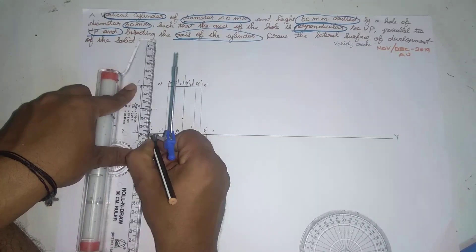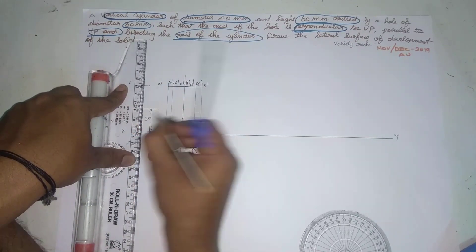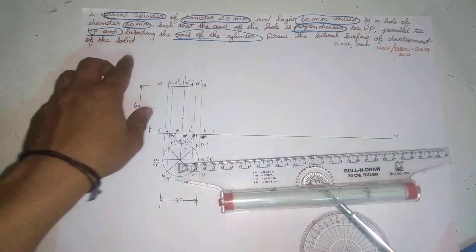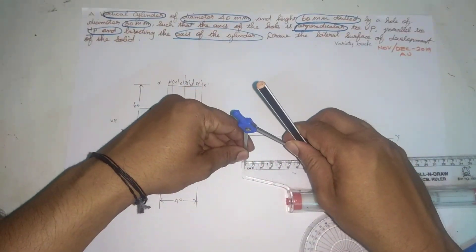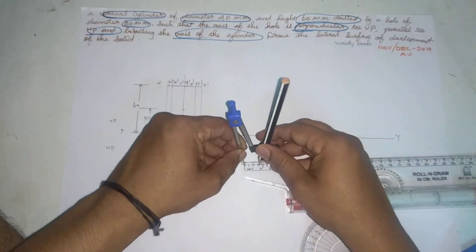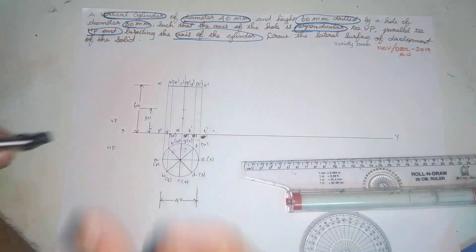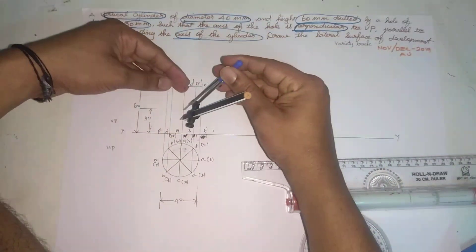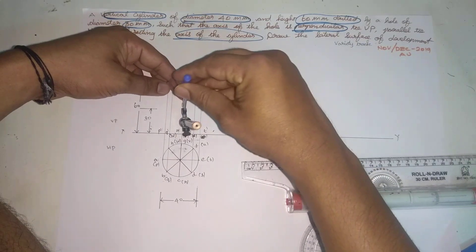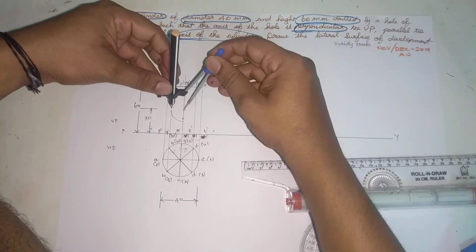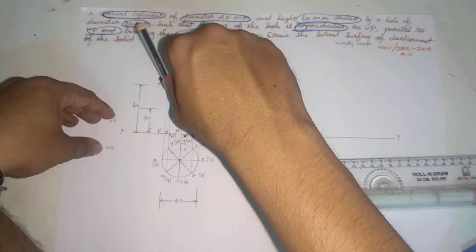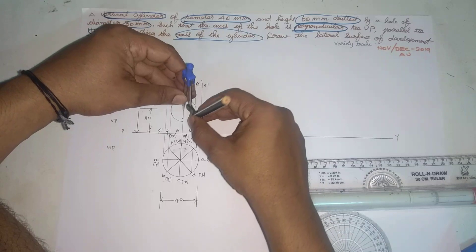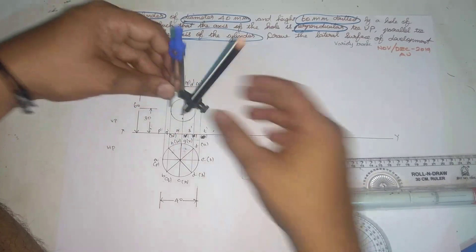This distance is 30, this distance is 30, this diameter is 30, and this distance is 50. So the radius here is 15 and the hole is perpendicular to the VP. This is the circle of the hole.